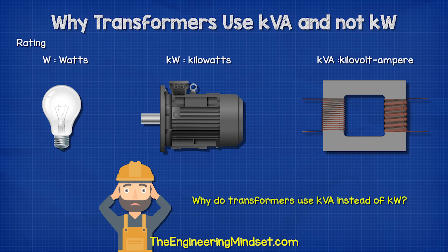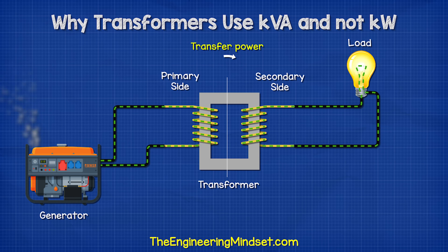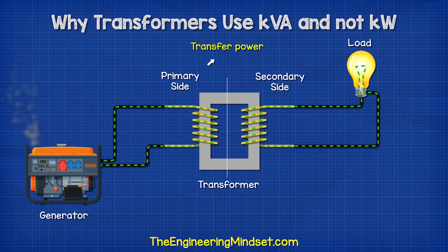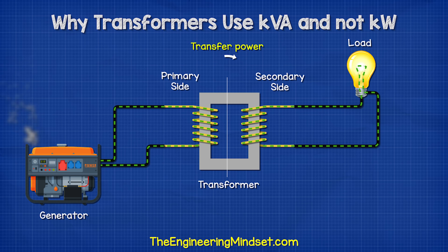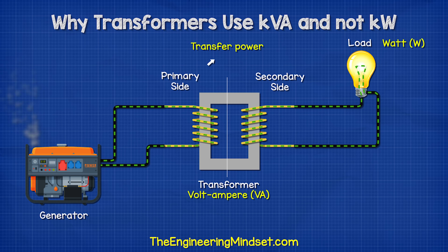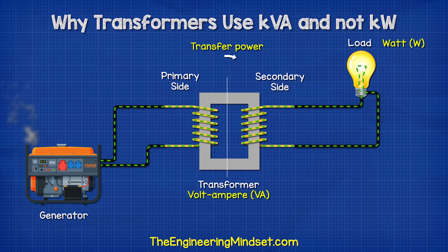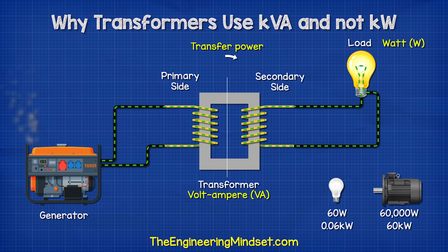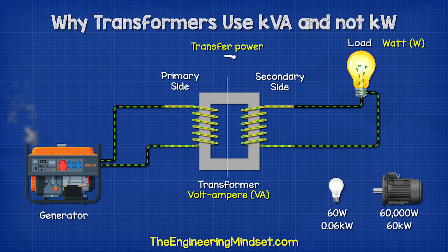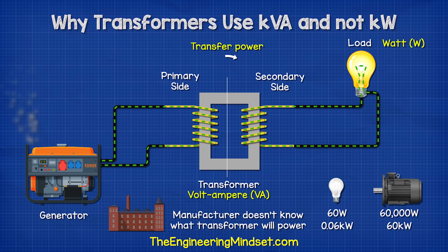So why do transformers use the units of KVA instead of kilowatts? Well, the transformer is just transferring power between the coils, so we use the volt amp unit. The kilowatts depend on what you connect to the transformer, and the manufacturer doesn't know what you will connect to it.